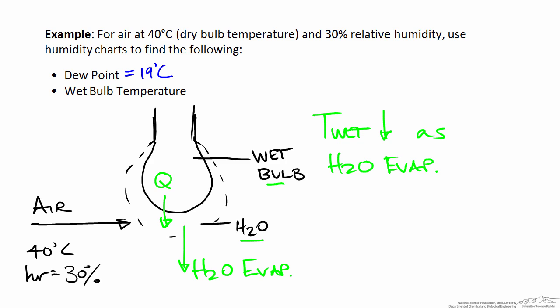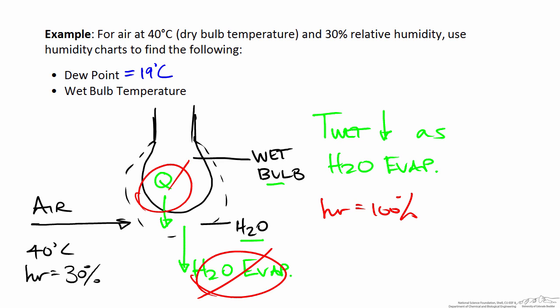The temperature of the wet bulb is driven down due to water evaporation, and how far the wet bulb temperature drops is a function of the moisture content of the air. We can think of a limiting case to illustrate this point. If the relative humidity is 100%, then air moving past the wet bulb is completely saturated with water, so water can't evaporate from the wick. If there is no evaporation, there is no heat loss, and consequently the wet bulb temperature won't change. So if the relative humidity is 100%, the wet bulb temperature equals the dry bulb temperature.